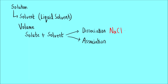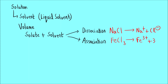An example of dissociation is any ionic compound like NaCl — it dissociates in water to give Na⁺ and Cl⁻, which means the number of ions is increasing, so the volume can increase. That is why the total volume is not equal to volume of solute plus volume of solvent. Another example is ferric chloride, which dissociates to give 1 Fe³⁺ ion and 3 Cl⁻ ions. Almost all ionic compounds undergo dissociation.